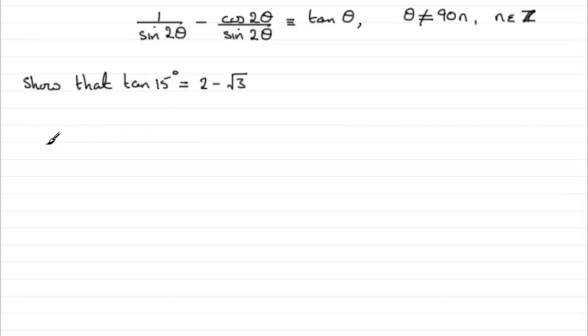Then we can say that tan 15 is going to equal 1 over sine 2 theta, theta being 15 degrees, so that's going to be 1 over the sine of 2 fifteens, which is 30 degrees. So 2 theta becomes 30 degrees. So we've got here minus cos of 30 degrees, all divided by the sine of 30 degrees.